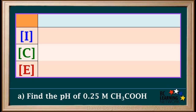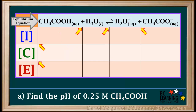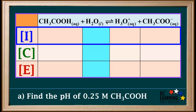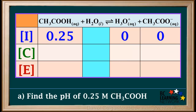We set up an ICE table like this. We start by writing the equilibrium equation for ionization of ethanoic acid. Next, we draw borders in so that the columns line up nicely with the substances in the equation. Water is a liquid in the equilibrium equation, so we can ignore the column below water — we'll color it blue here. We'll start with the initial concentration row. The initial concentration of ethanoic acid is 0.25 molar, so we'll add 0.25 to this cell.